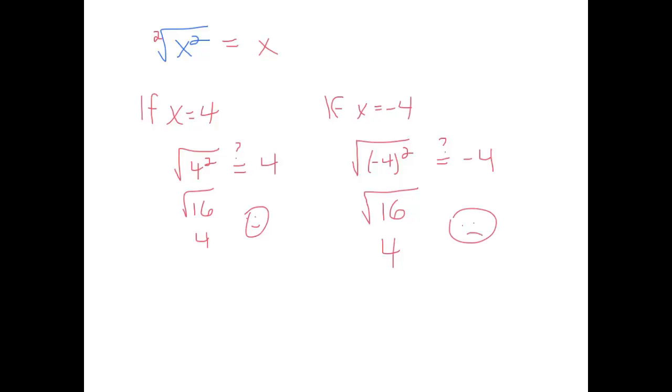So this rule worked when x was positive, and it didn't work when x was negative. So could we adjust our answer up here so that it works for both situations? We want to keep the answer as 4 in both situations. What could I do to negative 4 to turn it into a positive 4?